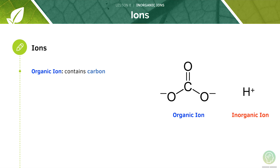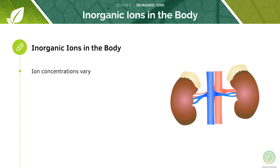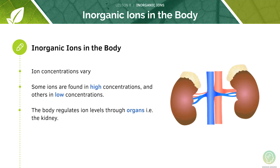Ions can be organic or inorganic. An organic ion will contain carbon, whereas an inorganic ion doesn't contain carbon. In this tutorial we're mainly going to focus on several key inorganic ions in the body. These ions can be found in the cytoplasm or in the bodily fluids of organisms. Ion concentrations can vary — some ions are found in very high concentrations, whilst others are found in low concentrations. The body carefully regulates ion levels through organs such as the kidney.